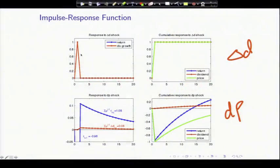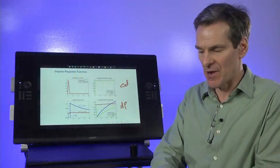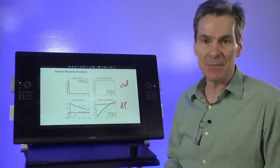The return and dividend growth, they lie on top of each other, they're just a one-period move, and then nothing happens. Adding them up is kind of interesting—this is the cumulative response. So what that tells us is when dividend growth being shocked for a period means the level of dividends goes up and stays up.